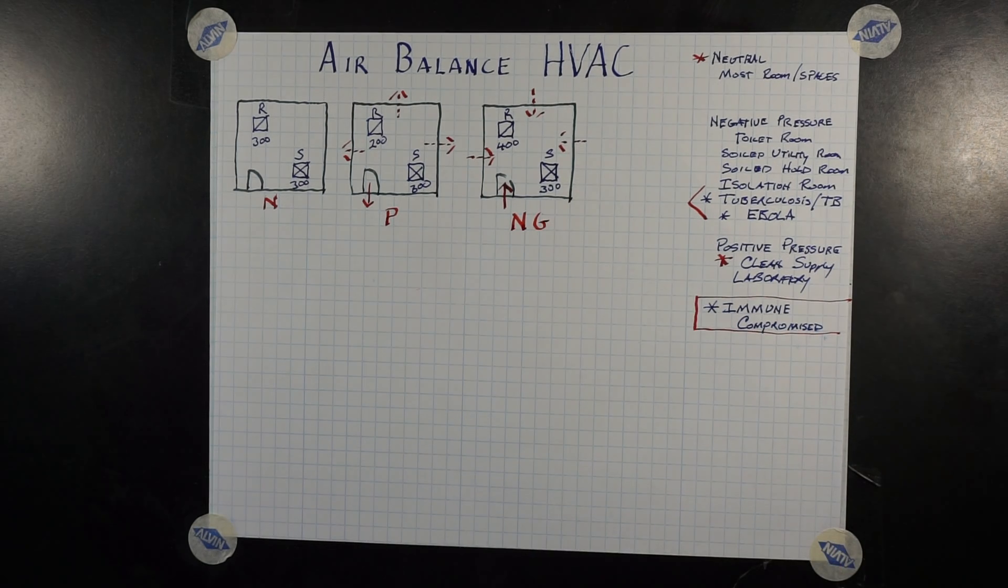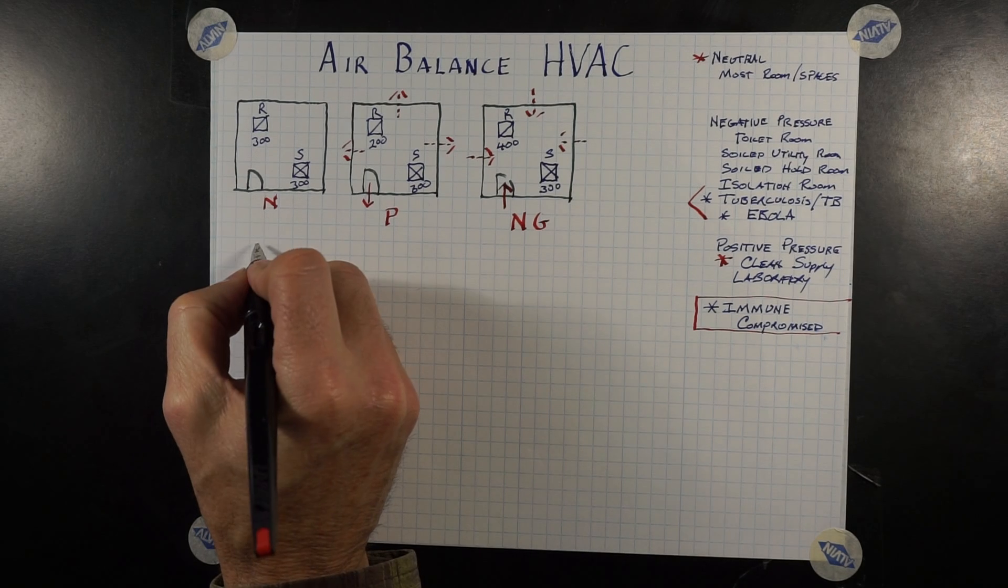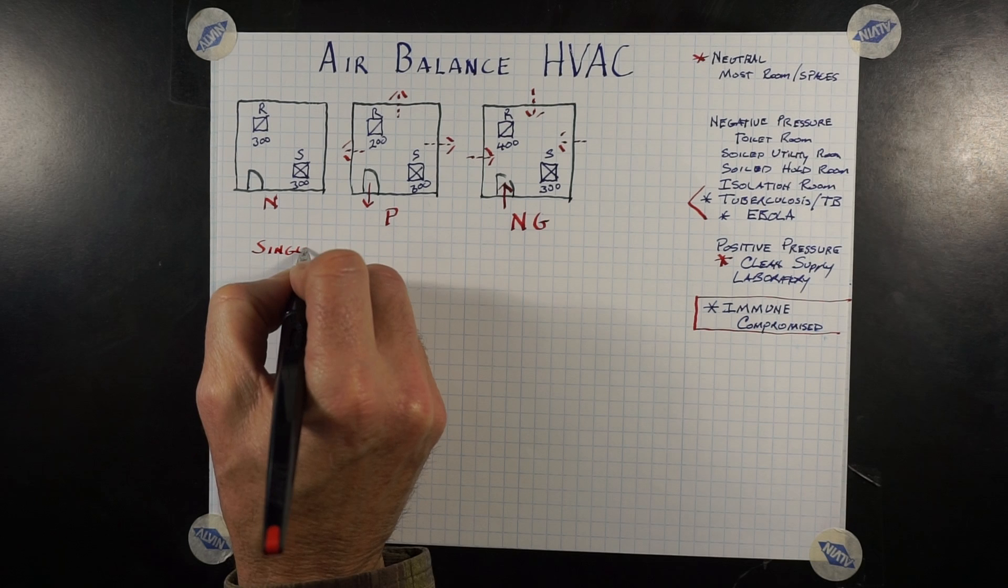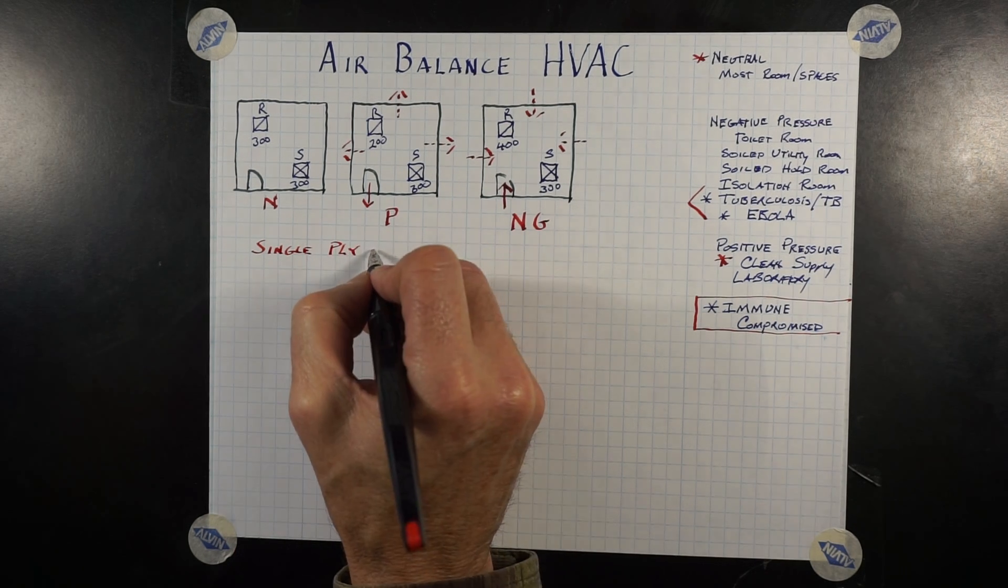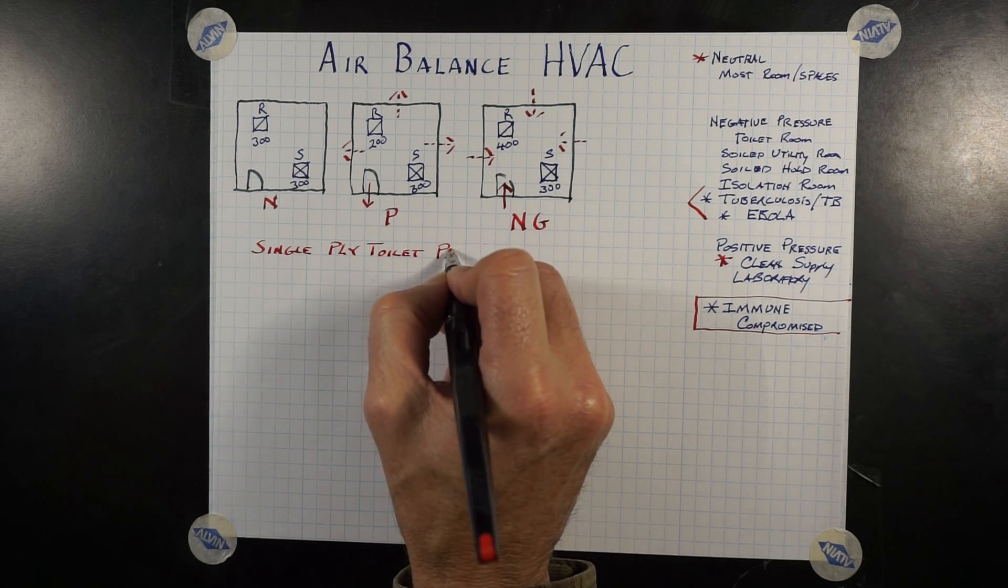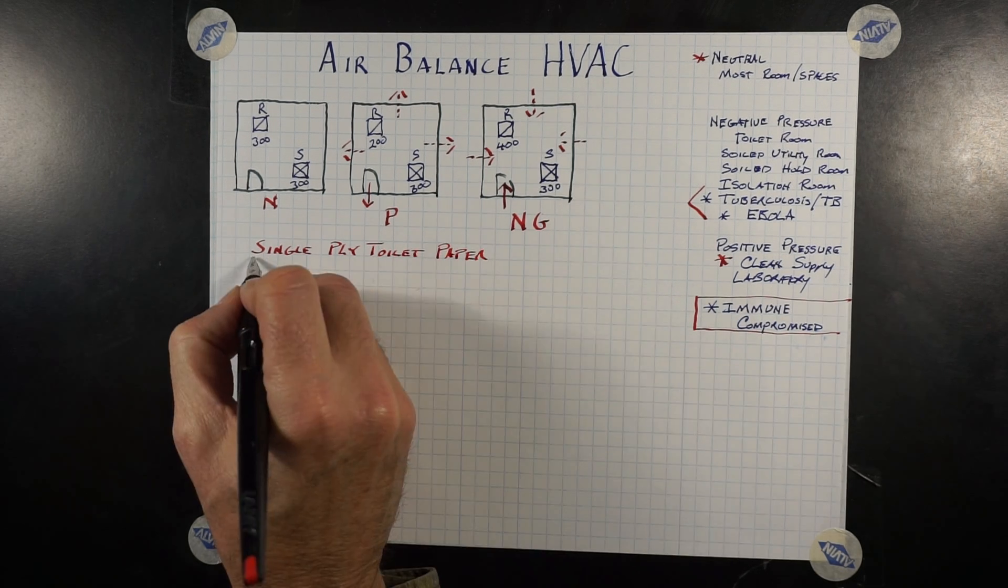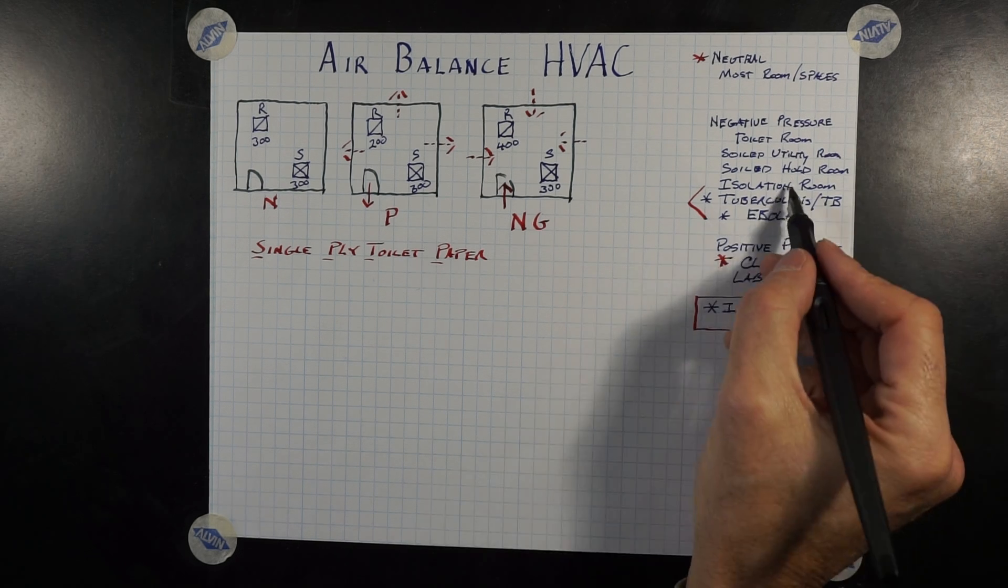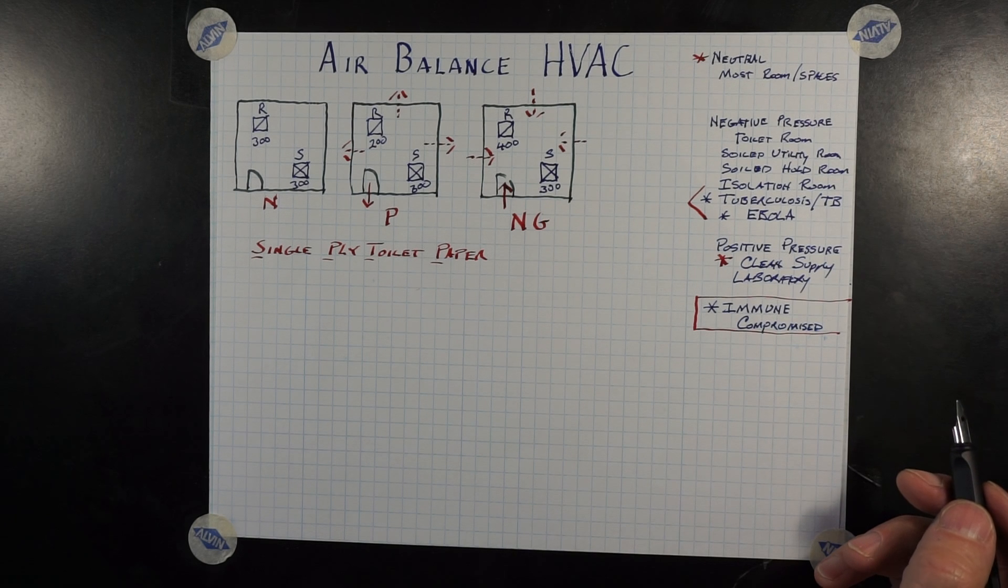In relationship to toilets, our rooms are negative pressure. Therefore, any odor is being exhausted outside. A great way of applying a test to see if the room is neutral, positive, or negative is the single-ply toilet paper test. Separate one sheet so you have a single-ply toilet paper, have it two or three squares long, and open the door slightly and hold the toilet paper at the edge of the door.